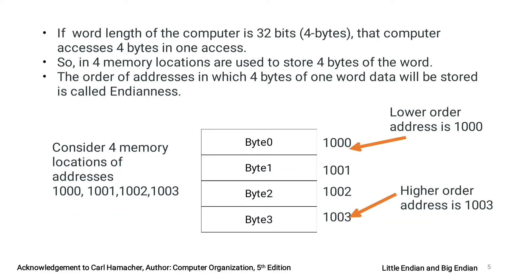Suppose the word length of a computer is 32 bits or 4 bytes. That means in a single memory access, 4 bytes of data are fetched. All 32 bits or 4 bytes are accessed from memory in a single access, with one byte stored per memory location, so 4 bytes occupy 4 memory locations. As shown in the figure, 4 memory locations are shown with addresses 1000, 1001, 1002, and 1003.